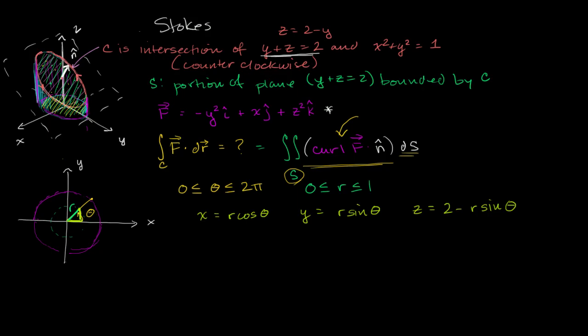That's our parameterization. If we wanted to write this as a position vector with two parameters, I'll call it lowercase s, since I already used r. Lowercase s, this is our surface, and it's going to be parameterized with r and theta.